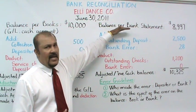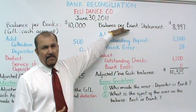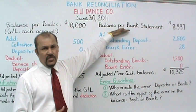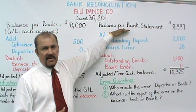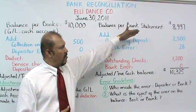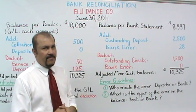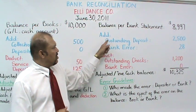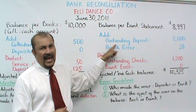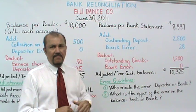The bank statement balance as of June 30th, provided from the bank, was $8,997. To that, we add outstanding deposits.